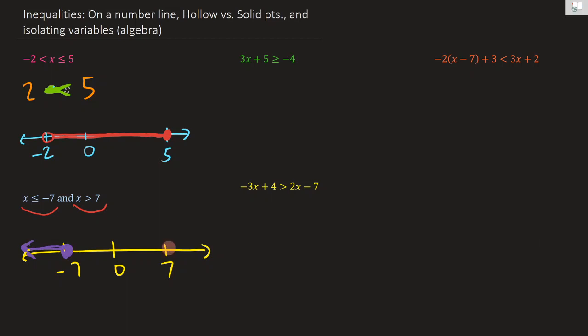On this side, we're going to do a hollow point and then go to the right because x has to be greater than 7, but it can't actually be 7 itself. So that's why we're going to have a hollow point there. Okay, so that's how you show these things on a number line.